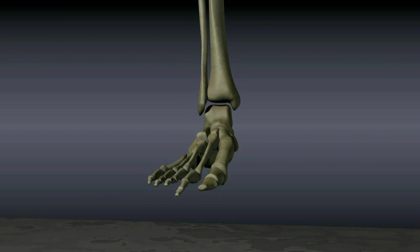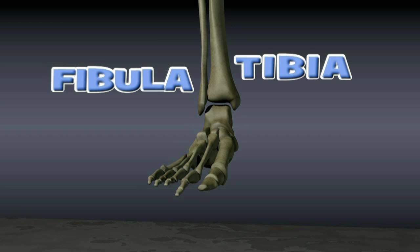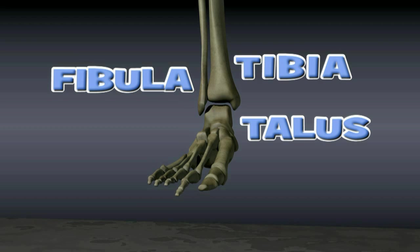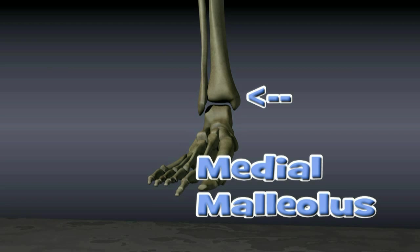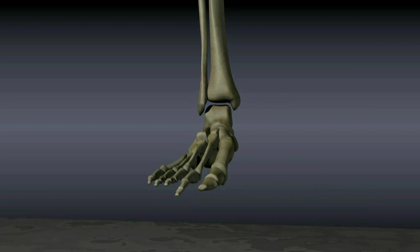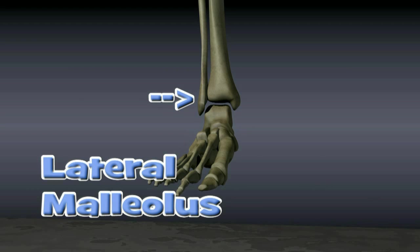The ankle joint is comprised of three bones: the tibia, the fibula, and the talus. The bottom of the tibia forms the bump that can be felt on the inside of the ankle. This bump is known as the medial malleolus. The bump on the outside of the ankle is the bottom of the fibula, known as the lateral malleolus.